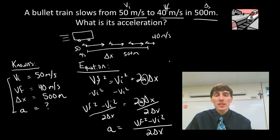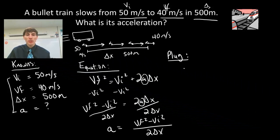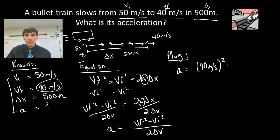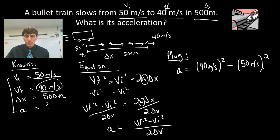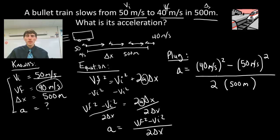The next step of KIPA is the P — plug in. We plug all known variables into the equation to solve for our unknown. Acceleration equals VF squared: VF is 40 meters per second, so we write (40 m/s) squared, minus VI squared: VI was 50 meters per second, so minus (50 m/s) squared, all divided by 2 times delta X, where delta X was 500 meters. We punch that into our calculator to get our final answer.